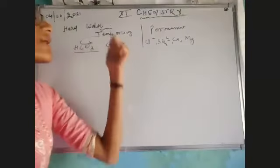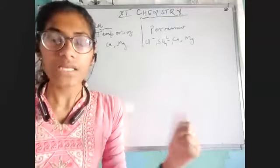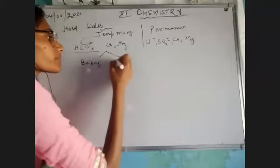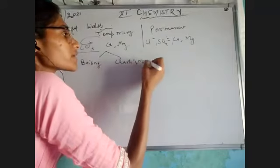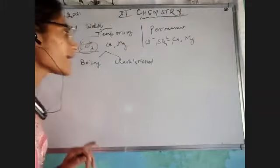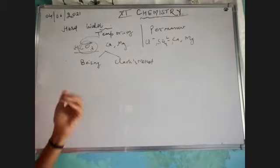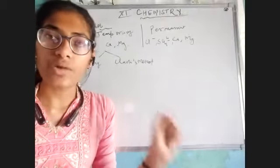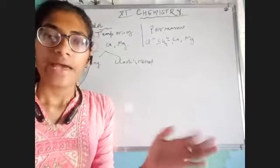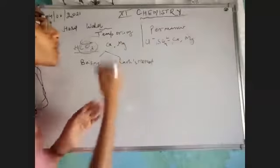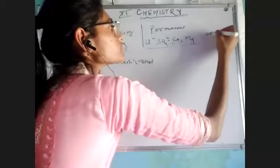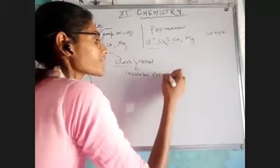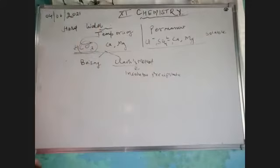We have come to know that temporary hardness of water can be easily removed by two simple methods: one is boiling and the second is Clark's method. If we just boil our water, the bicarbonate would be broken down and released as carbon dioxide, removing the temporary hardness. In Clark's method, a sodium compound replaces the calcium and magnesium, making a precipitate, so the soluble impurities become insoluble precipitate and can be easily removed by filtration.